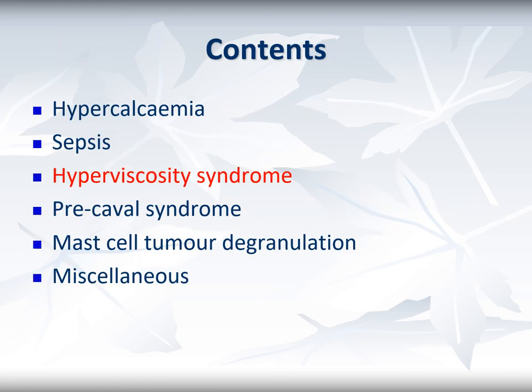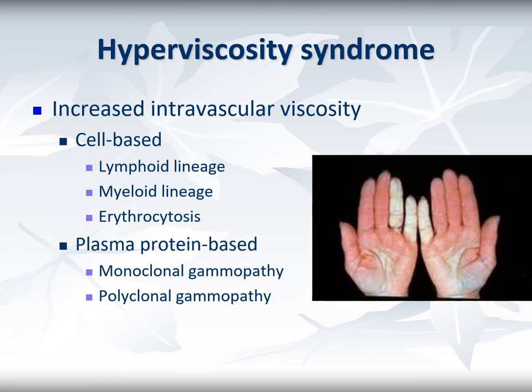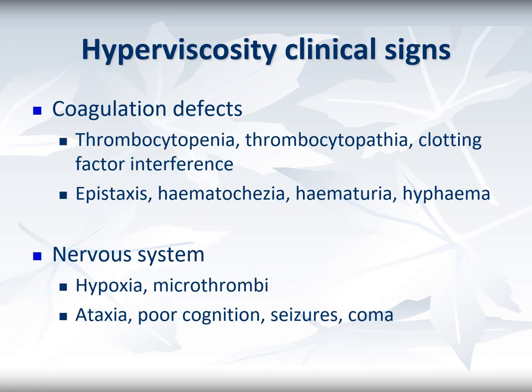Moving on to hyperviscosity syndromes. Hyperviscosity is due to increased intravascular viscosity and can be caused by an excessive number of cells — with any lineage potentially at fault — or by excessive plasma proteins from either a monoclonal or polyclonal gammopathy. The pictured patient has hyperviscosity syndrome affecting selected vessels and decreasing perfusion, which accounts for many of the clinical signs seen. Hyperviscosity syndromes can cause coagulation disorders through multiple mechanisms, including thrombocytopenia if the marrow is compromised, as well as poor access to and function of platelets with coagulation factors.